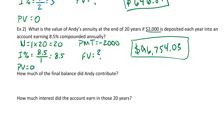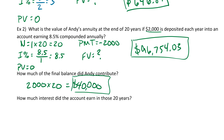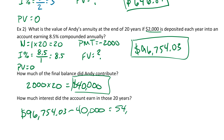How much of the final balance did Andy contribute? He deposited $2,000 once a year for 20 years, so 2,000 times 20 equals $40,000 contributed. How much interest did the account earn? Take the final amount — $96,754.03 — and subtract Andy's contributions of $40,000. That gives $56,754.03 earned in interest over those 20 years.